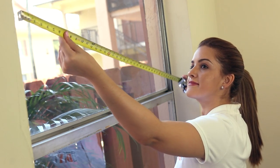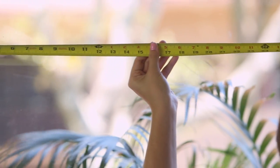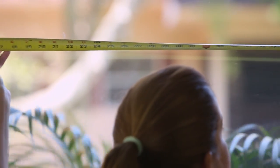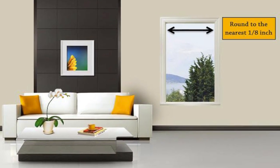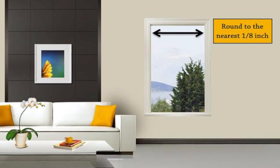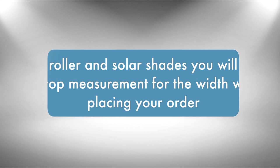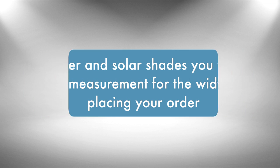First, measure the width of the window inside the casing where you'll be mounting your roller or solar shade. Don't forget, use your steel measuring tape. Measure the width of the window, always rounding to the nearest eighth of an inch. For roller and solar shades, you will use the top measurement for width when placing your order.